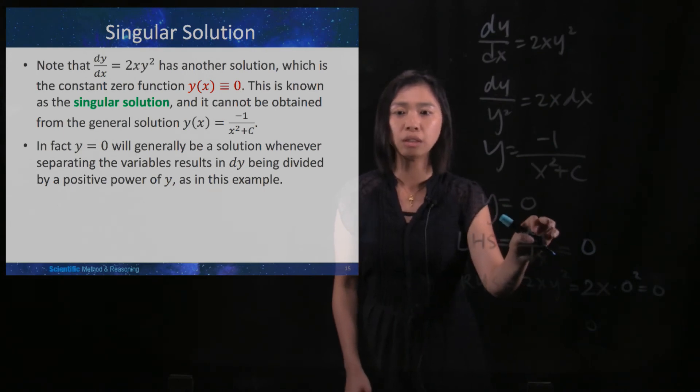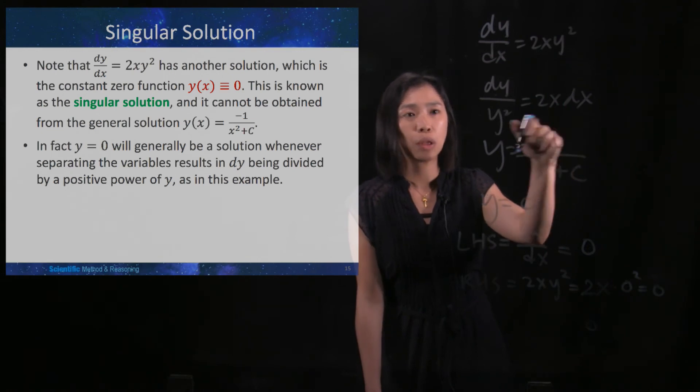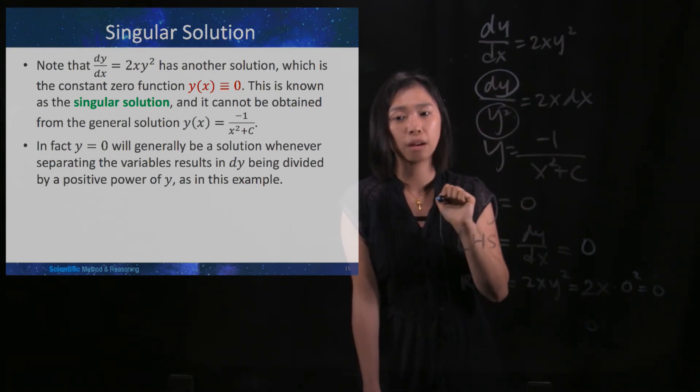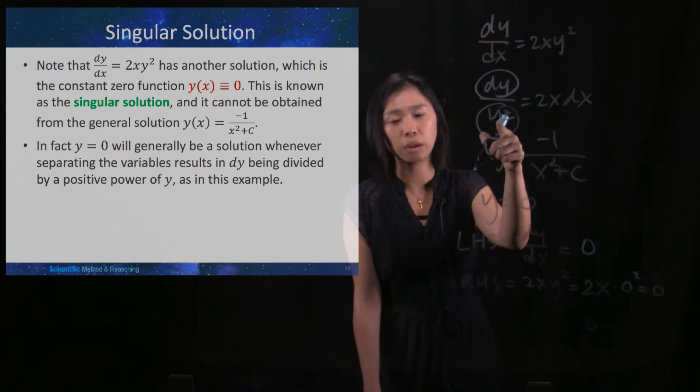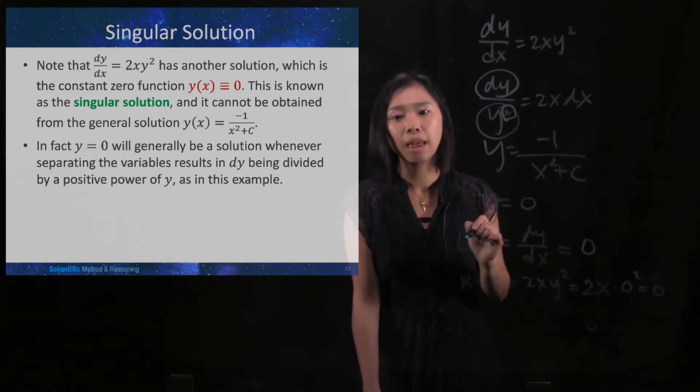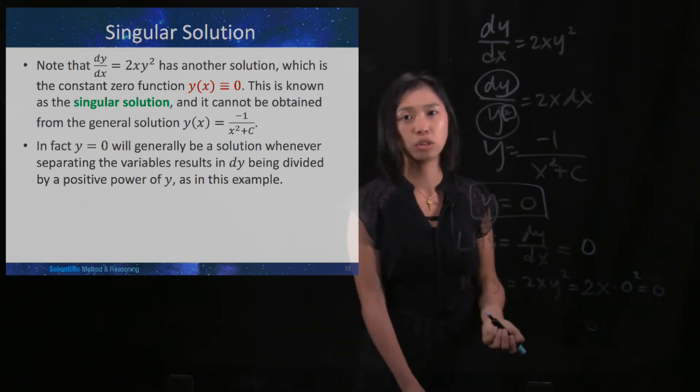In fact, y = 0 will generally be a solution whenever, when you do the separating the variables, you have dy divided by a positive power of y. Like here, you've got dy divided by y squared, so the 2 is positive. Then you will get y = 0 as an extra singular solution.